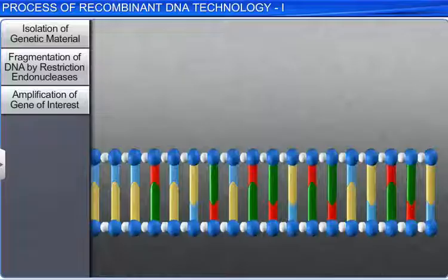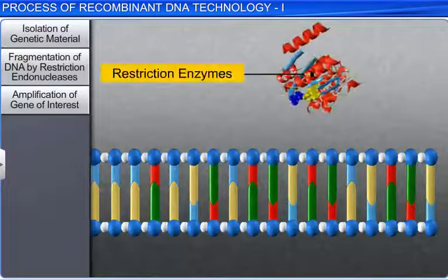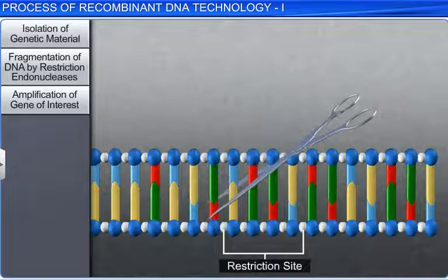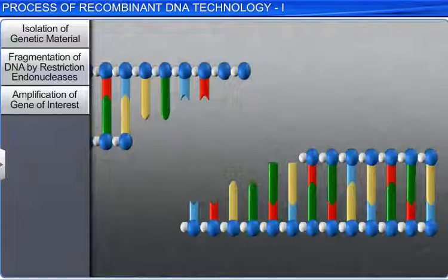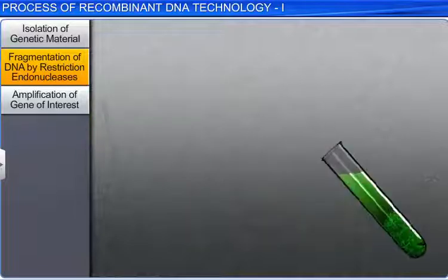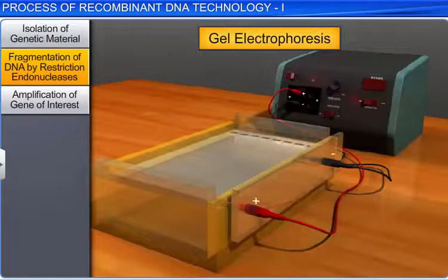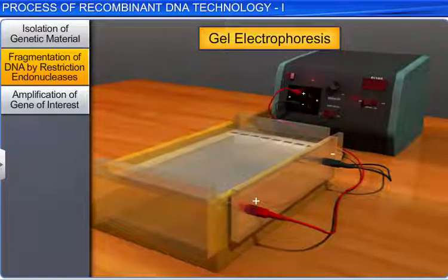After isolation of DNA, in the next stage, restriction enzymes are used to cut the purified DNA molecules at specific locations. This cutting results in DNA fragmentation. The fragmented DNA can be separated according to its molecular weight by using a technique known as gel electrophoresis. It is employed to check the progression of restriction enzyme digestion.